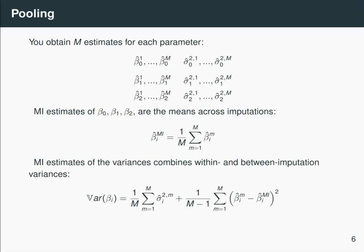Now the multiple imputation estimates of the variances are a bit more complicated. It combines the within imputation variance—so this is the mean of the variances across the m imputations—and it also takes into account the between imputation variance. So in this way, multiple imputation is able to account for the uncertainty of the values that you impute. Now most software packages will do the pooling for you automatically, so you don't have to code this up at all.